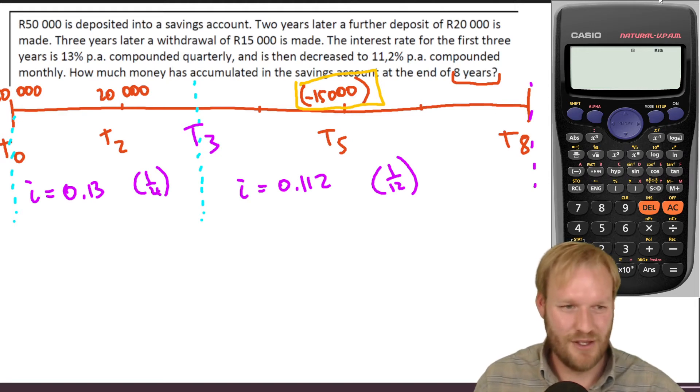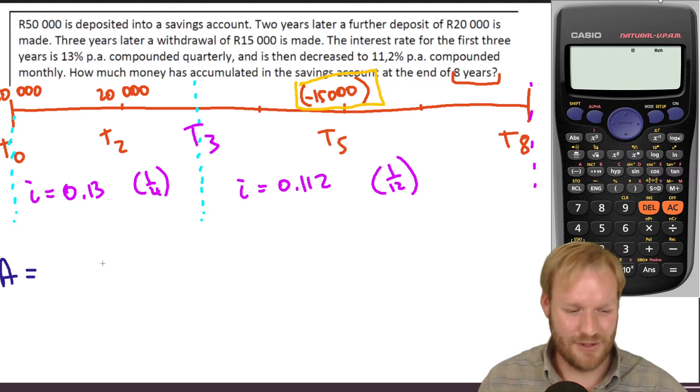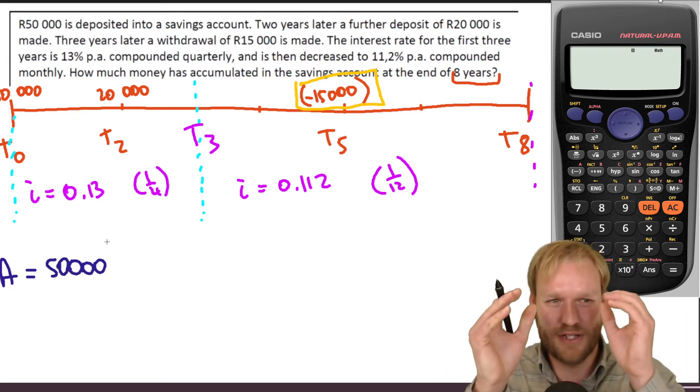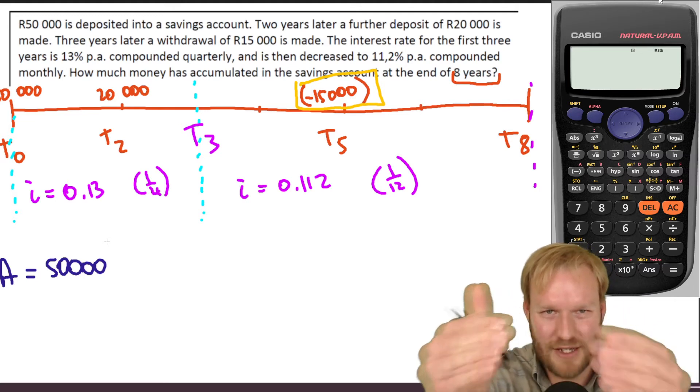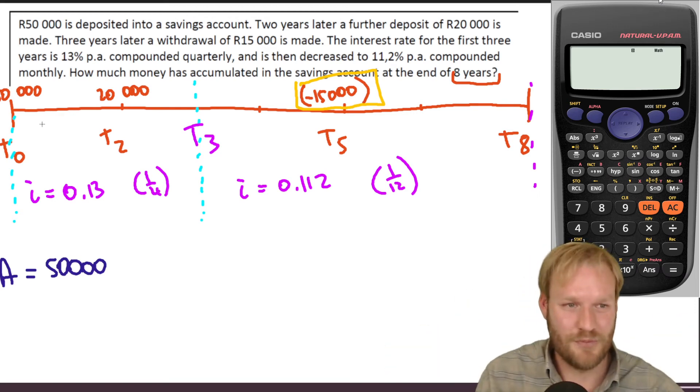So at T eight, we've got, maybe let's go for blue, A equals. Now these are long formulae, right? So we've taken our 50,000, and now we're going to look at each amount. So we can look at that 50,000 and see what happens over eight years, then the 20,000 and see what happens for that, and then the 15,000 and subtract that.